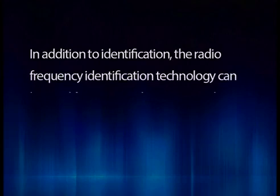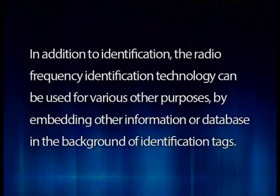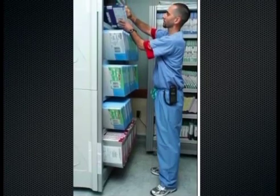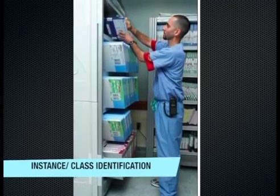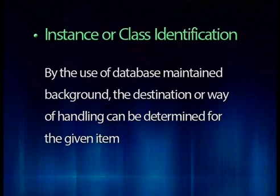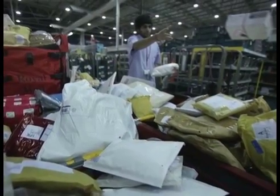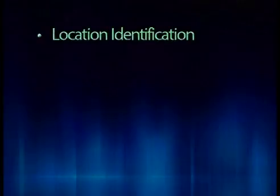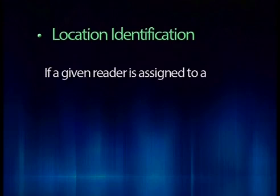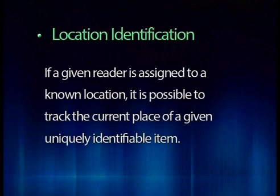In addition to identification, RFID technology can be used for various other purposes by embedding other information or a database in the background of identification tags. The technology can also support instance or class identification. By the use of a database maintained in the background, the destination or way of handling can be determined for a given item. For example, in postal services, items are classed according to destination. For location identification, if a given reader is assigned to a known location, it is possible to track the current place of a given uniquely identifiable item.